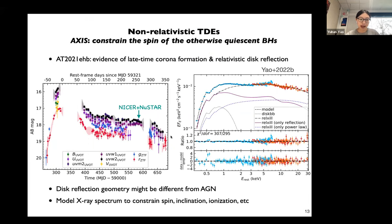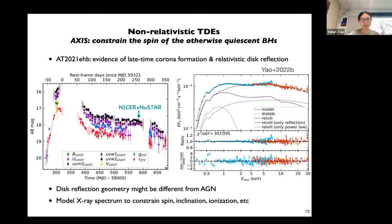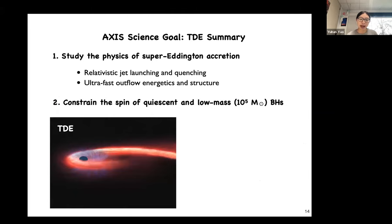But surprisingly, in the recent TDE AT2021EHB, joint observations between NICER and NuSTAR clearly show that at later time during the TDE evolution, the X-ray spectrum develops a prominent hard power-law component as well as an extremely broad line around 6 keV, presumably from iron K-alpha emission. So in the future, we would like to find more TDEs with evidence of late-time corona formation and use AXIS to constrain the spin of otherwise quiescent black holes. Hopefully, we will find sources hosted by 10 to the 5 solar mass black holes, and it would be very interesting to see if black holes in the intermediate mass regime still exhibit high spins.